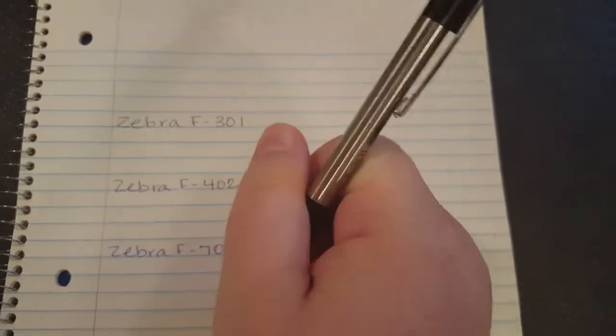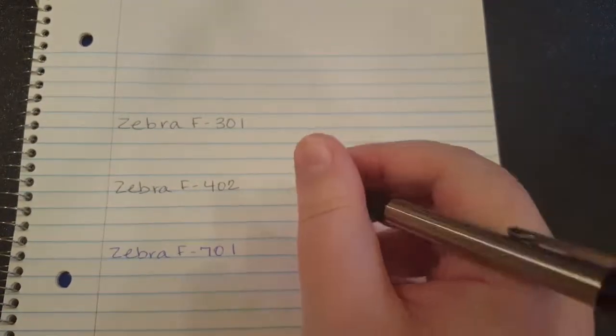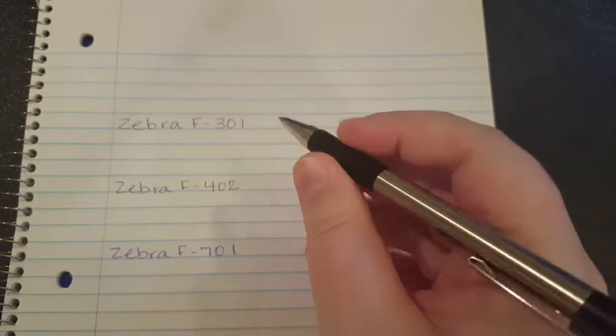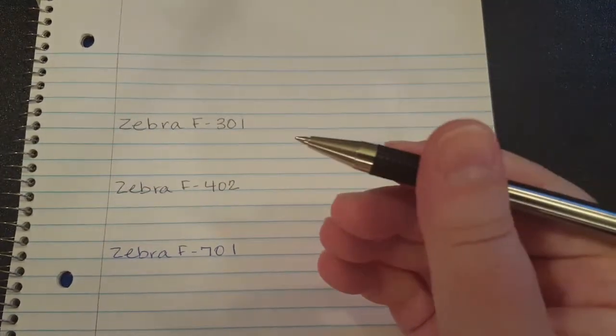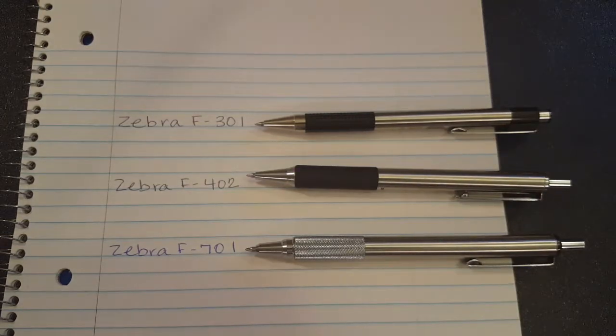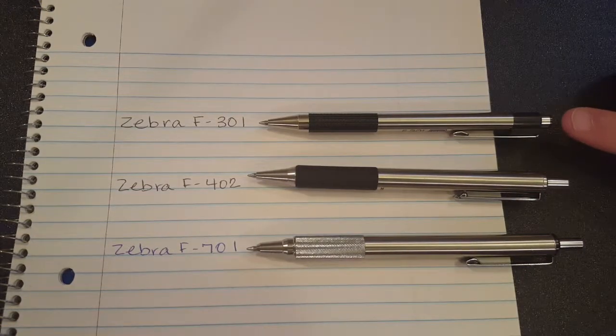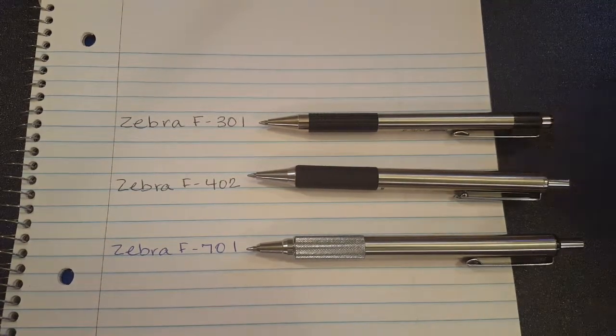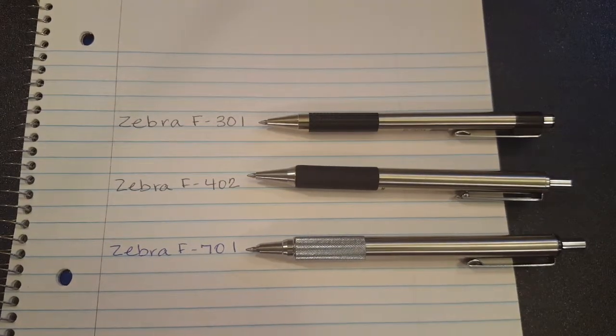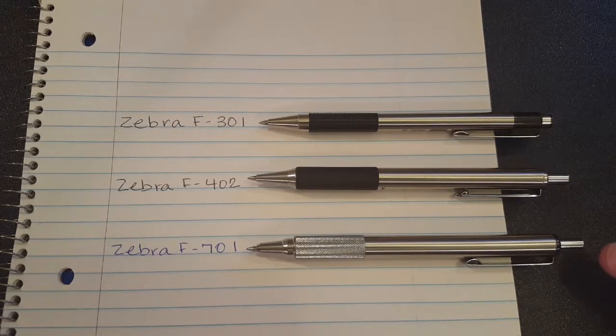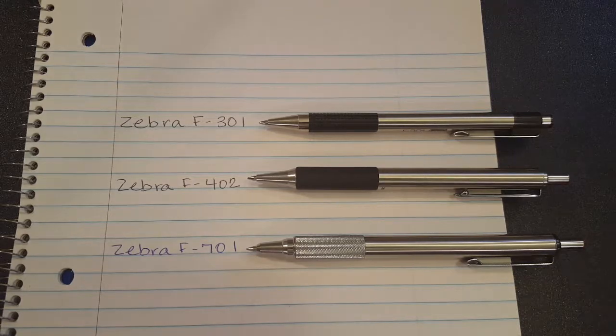When you get down to the 301, it just... Like I said, I compared it to the mechanical pencil version because I used it before I even found out about the pens. And that is what I've been comparing it to, is the mechanical pencil, because it feels exactly the same. This comes in at about $1.99 per. I found them in a two-pack for $3.98. So just under $2 a pen. The F-402 is around $3.35 a pen. And the F-701 is about $5.15 for a single.